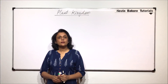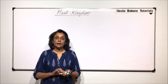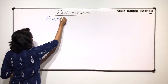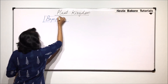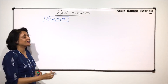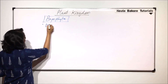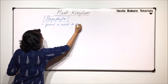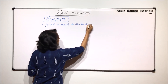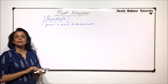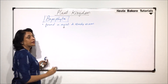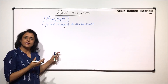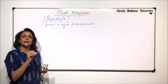We are now starting with another group in Plant Kingdom, and that is Bryophyta. This group includes plants which are found in moist and shady areas. They are always found in moist and shady areas, and there is a reason for it. They require water, so these plants grow in moist areas where there has to be a little water or a thin layer of water present.